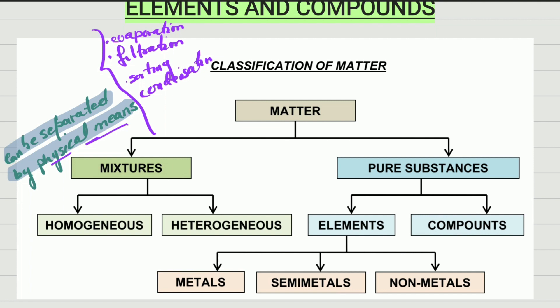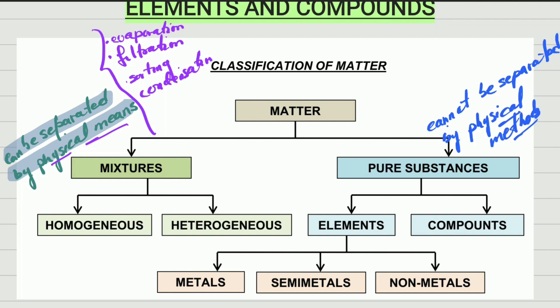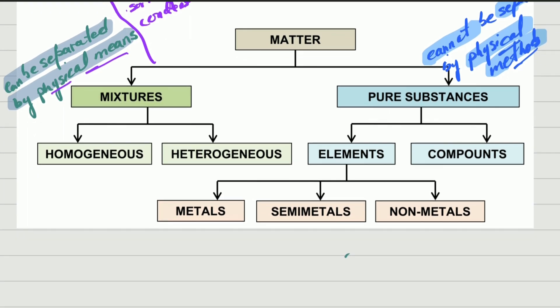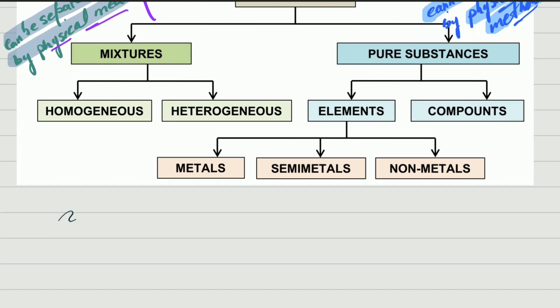Pure substances are something different. A pure substance is a substance that cannot be separated into simple components by physical means. Pure substances cannot be separated using physical methods — there is another way to separate a pure substance. Now, pure substances can be divided into two main groups. The first group is elements.